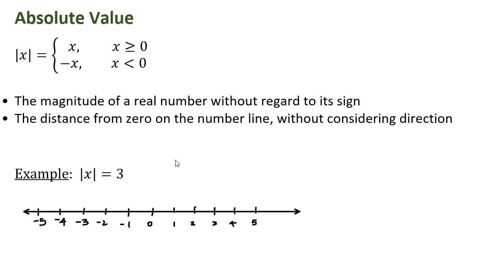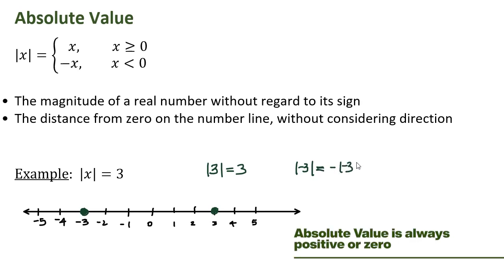In this example we're asked to find the absolute value of 3. Positive 3 satisfies this equation because the absolute value of positive 3 equals 3 according to this definition. But also if I plug negative 3 into this equation, the absolute value of negative 3 is the magnitude of the real number without regard to its sign — the distance from zero on the number line without considering direction is 3 away. Using our definition it means it's the opposite of negative 3, which is positive 3. So absolute value is always positive or zero.